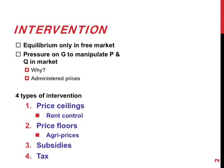Government can set price ceilings, for example rent control. They can set price floors, for example agricultural prices. They can pay subsidies to the producers and in that way lower cost and hopefully prices. Or they can tax products and in that way increase cost and increase prices.